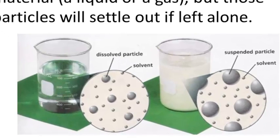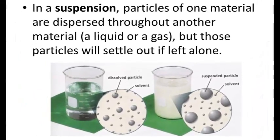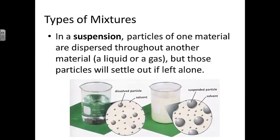In a suspension, particles of one material are dispersed throughout another material in a liquid or a gas, but those particles will settle out if they're left alone. As we can see in this image, the beaker on the left has dissolved particles just slightly larger than the solvent particles. On the right, we can see a beaker with suspended particles that are either larger or clumped together into larger groupings scattered amongst the solvent particles — an example that will settle out if left to stand.